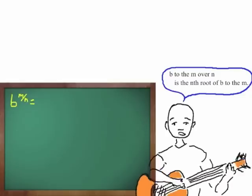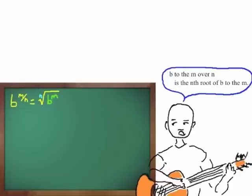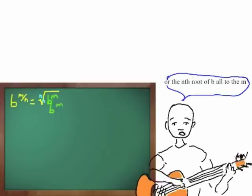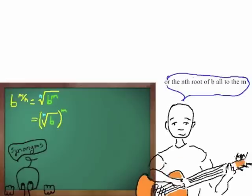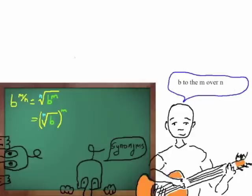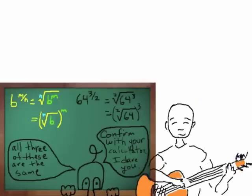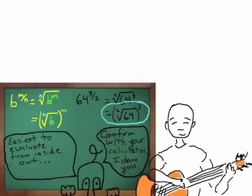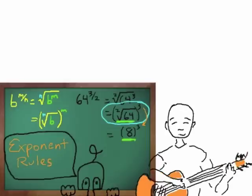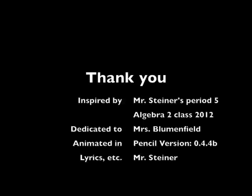B to the M over N is the nth root of B to the M, or the nth root of B, all to the M. B to the M over N.